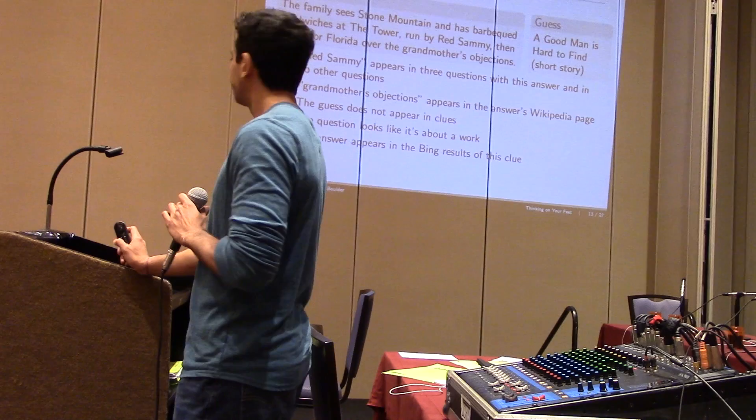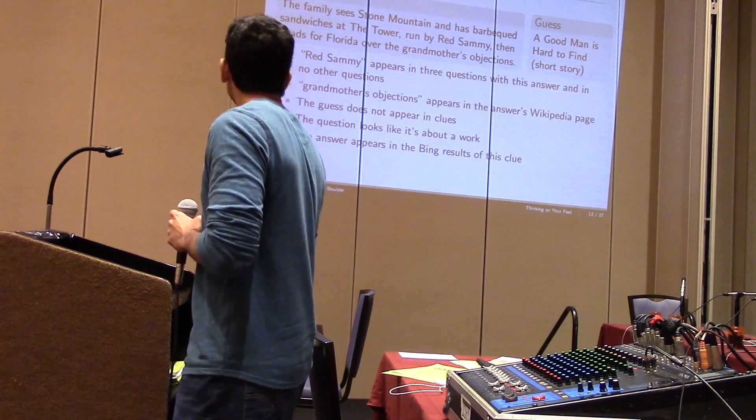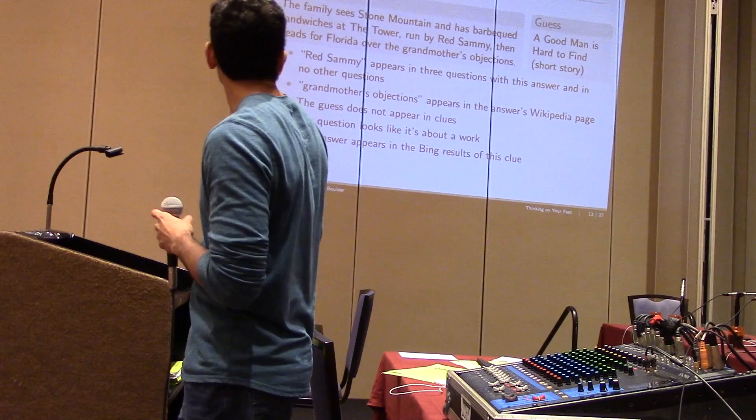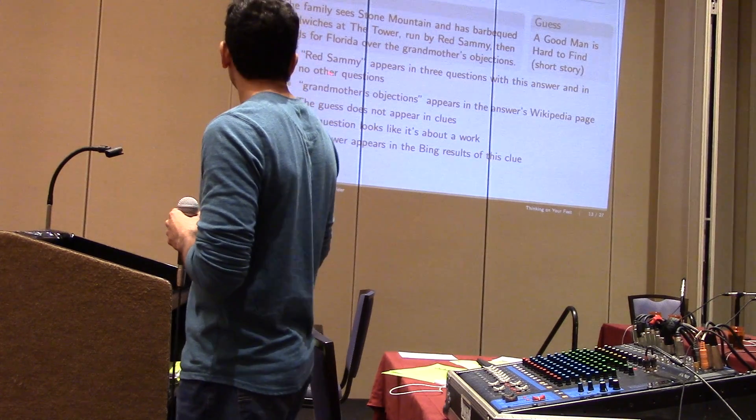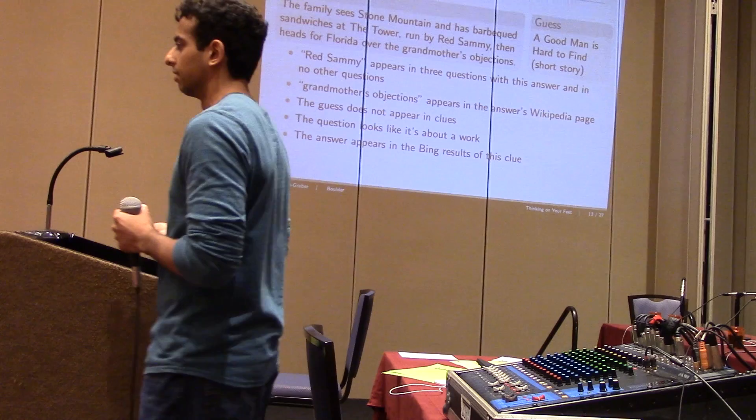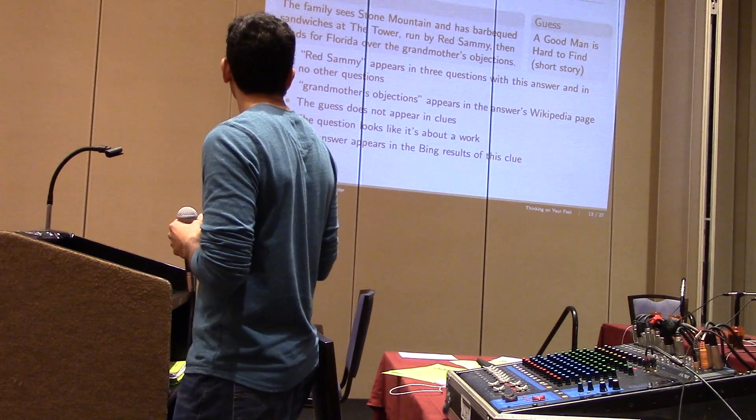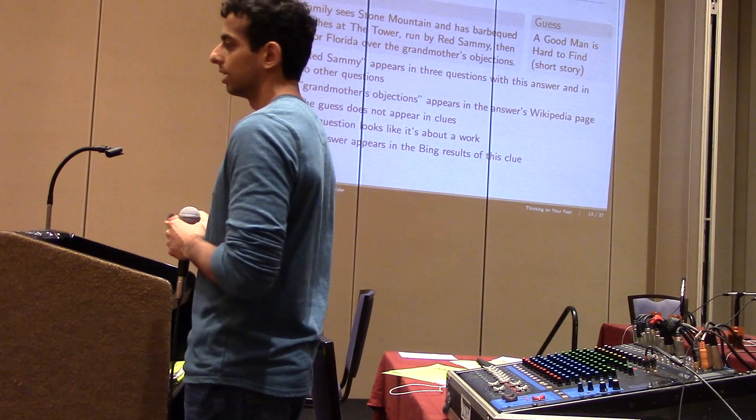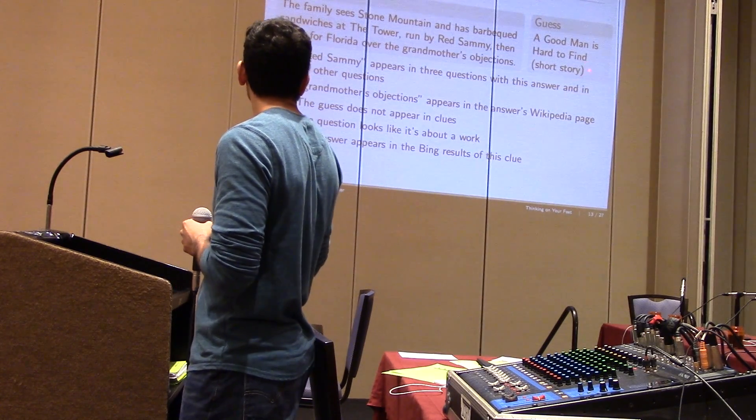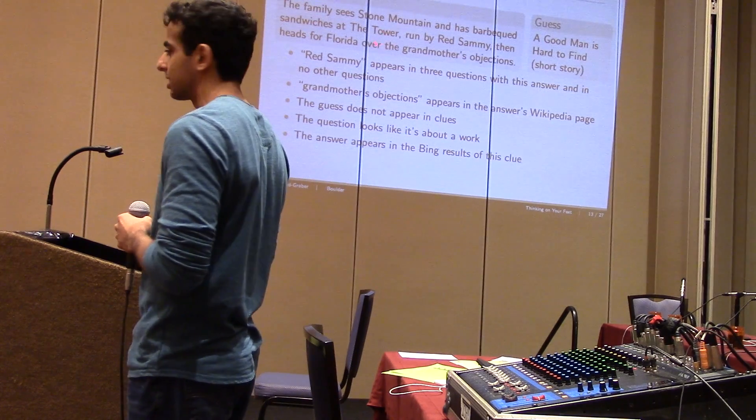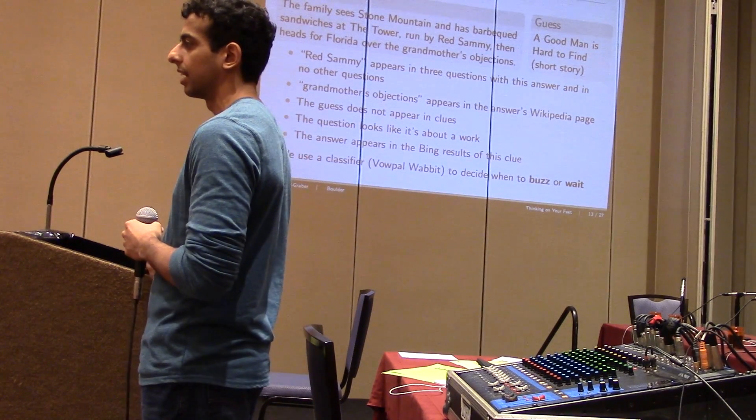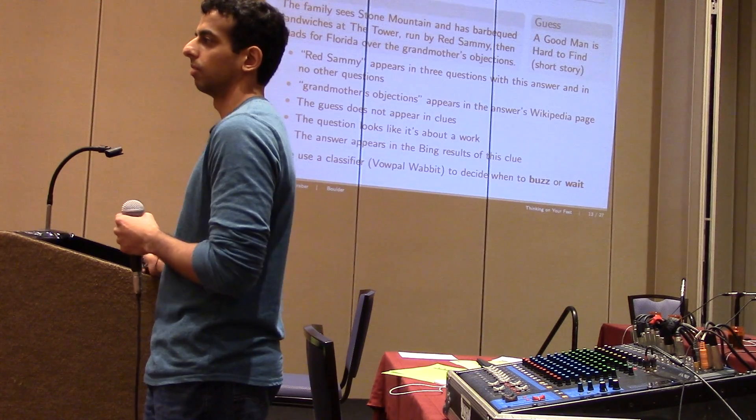So in this part of our system, we basically extract a bunch of features from both the guess and the text. And so in the question it mentions the name Red Sammy, Red Sammy is a character in the story. And so we find that Red Sammy appears in three questions about A Good Man Is Hard to Find and in no other questions. So it's obviously indicative of the answer and an important name. Similarly, grandmother's objections appears in the Wikipedia page for A Good Man Is Hard to Find. And we also do a bunch of sanity checks like A Good Man Is Hard to Find is not present in the actual text of the question because otherwise it wouldn't be the answer. And so in the end, we put all these features into a classifier and that decides when to buzz or when to wait for more text.